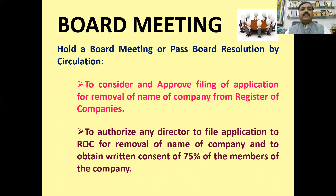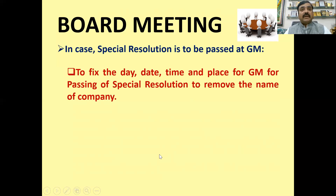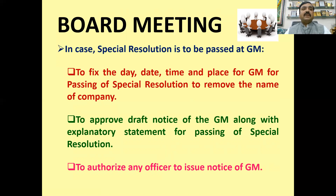75% means in terms of paid-up capital. Second, if the meeting is being called, then a special resolution will be passed at the meeting, and the date, time, and place of the meeting will be decided in the board meeting. Also, the notice and the explanatory statement will be drafted, and one person will be appointed to circulate the notice.